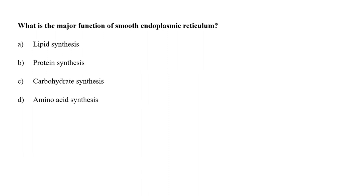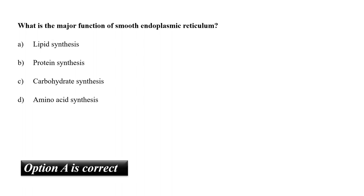What is the major function of smooth endoplasmic reticulum? A. Lipid synthesis, B. Protein synthesis, C. Carbohydrate synthesis, or D. Amino acid synthesis? The major function of smooth endoplasmic reticulum is lipid synthesis. Protein synthesis is carried out by the rough endoplasmic reticulum. So the correct answer is option A, lipid synthesis.